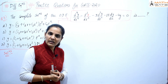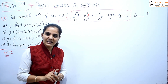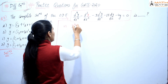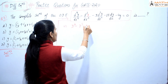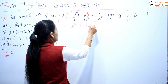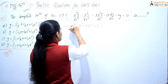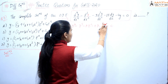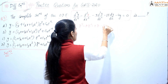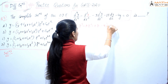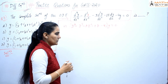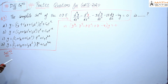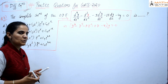This is a higher order differential equation. We can write it in operator form as D⁴ minus D³ minus 9D² minus 11D minus 4, applied to y, equals 0.